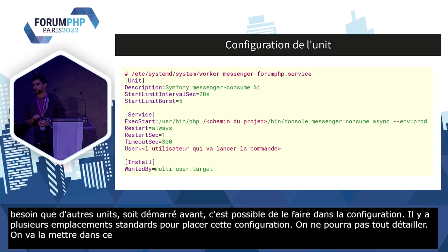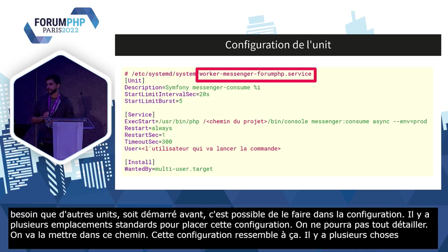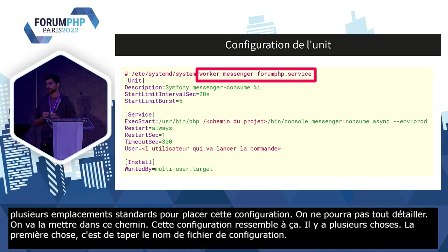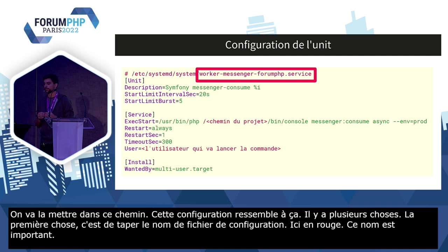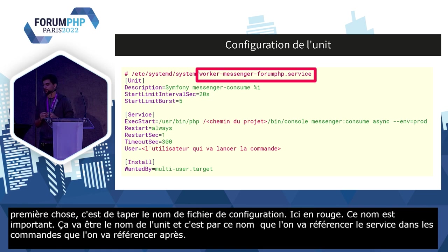Cette configuration ressemble à ça. Il y a plusieurs choses à noter. La première, c'est le nom du fichier de configuration : worker-messenger-forum-php.service. Ce nom est important, c'est le nom de l'unit, et c'est par ce nom qu'on va référencer notre service dans les commandes qu'on va lancer. Le .service est important, c'est ce qui permet de dire à Systemd que c'est une unit de type service.